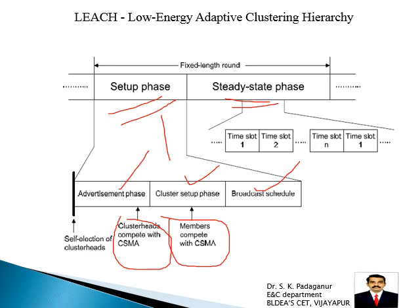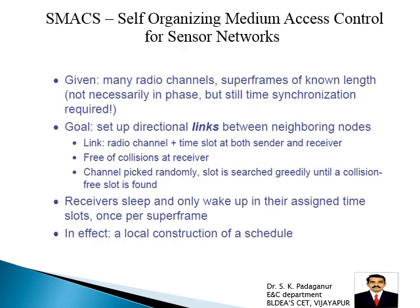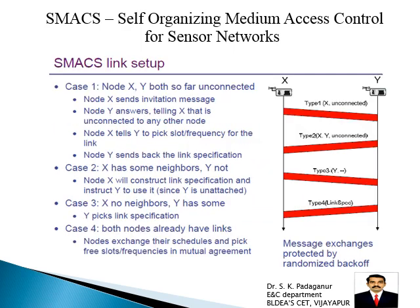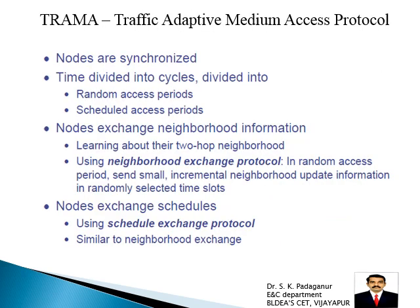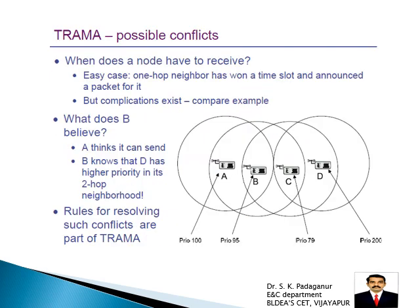That is the first scheduled-based protocol. We also have SMACS — self-organizing media access control for sensor networks — and TRAMA — traffic-adaptive media access protocol. For SMACS, link setup needs to be studied in detail. The different aspects of TRAMA will be covered in the next class.